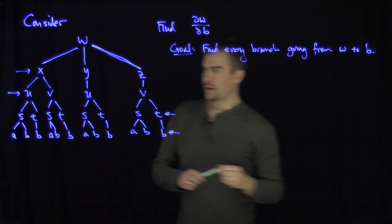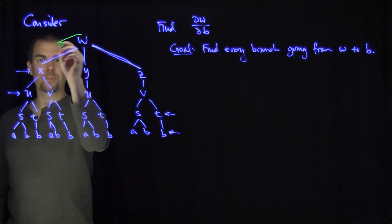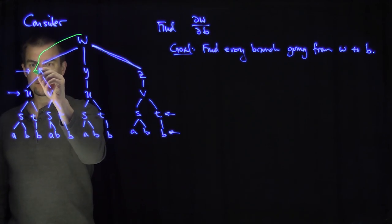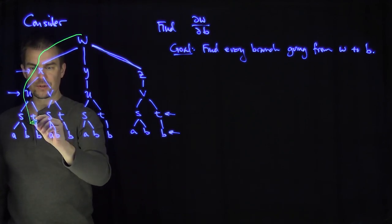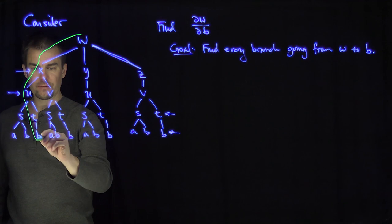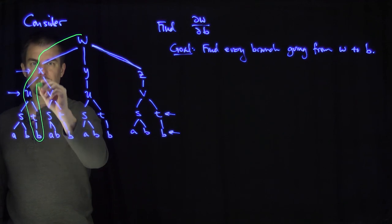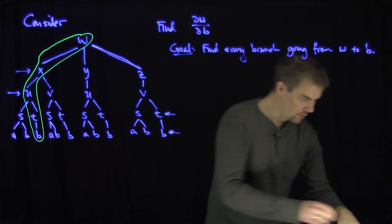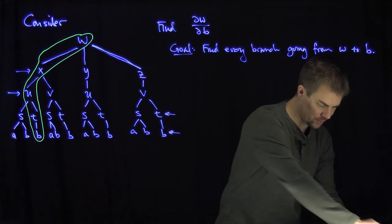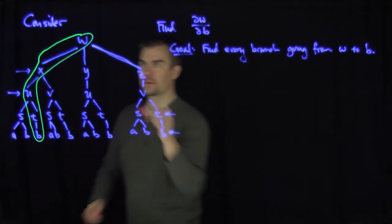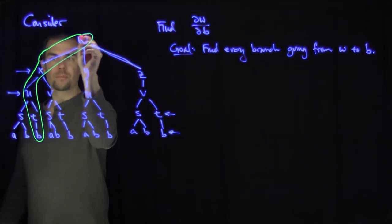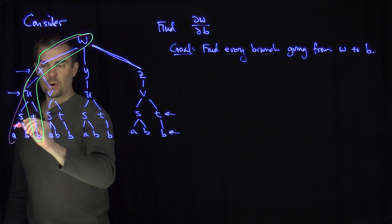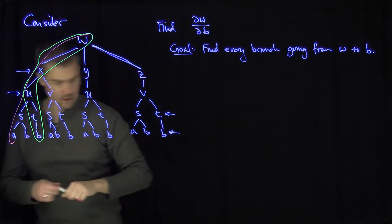Here's one way I can go. I can go from w to x, from x to u, from u to s, and from s to b. That's one trajectory. Another way: I can go from w to x, from x to u, from u to t, and from t to b.